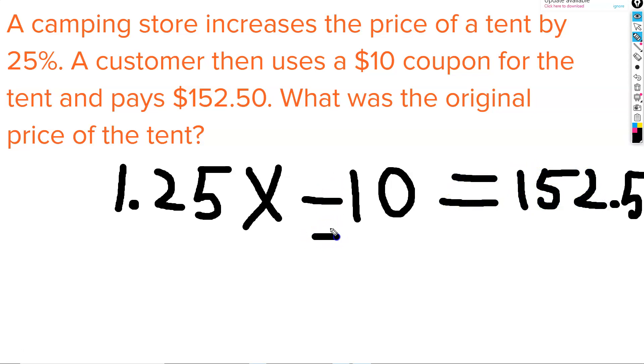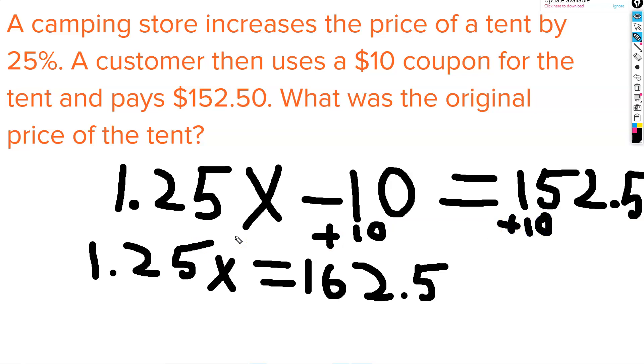To solve this equation, we'll start by adding 10 to both sides. This tells us that 125% of x equals $162.50. So our next step, we'll be dividing by that 125% on both sides.